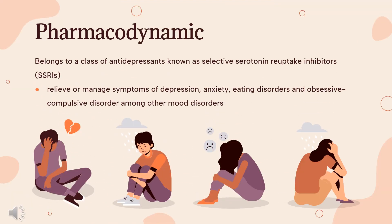Pharmacodynamics: Citalopram belongs to a class of antidepressants known as selective serotonin reuptake inhibitors, SSRIs. It has been found to relieve or manage symptoms of depression, anxiety, eating disorders, and obsessive-compulsive disorder, among other mood disorders. The antidepressant, anxiolytic, and other actions of citalopram are linked to its inhibition of CNS central uptake of serotonin.